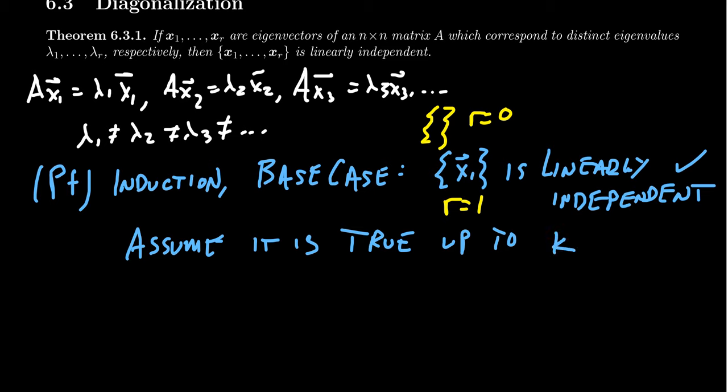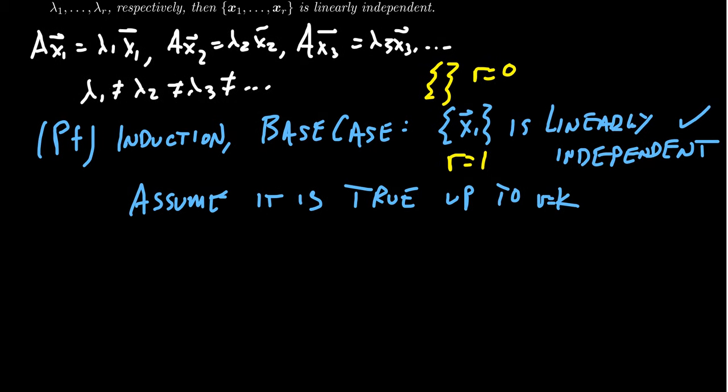So we've proven it's true for one, for R equals two, three, four, five, up to some value R equals K. So let's consider then the next iteration. Consider the case where we have X1, X2, up to X K plus one, many eigenvectors.